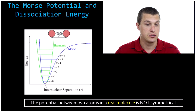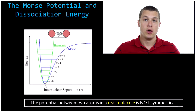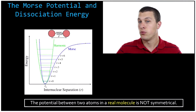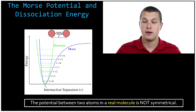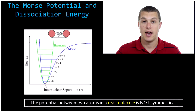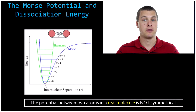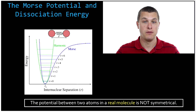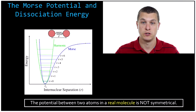The Morse potential is a way to describe the interaction between two atoms in a diatomic molecule. Specifically, we're thinking about the vibration of these two atoms with respect to each other.